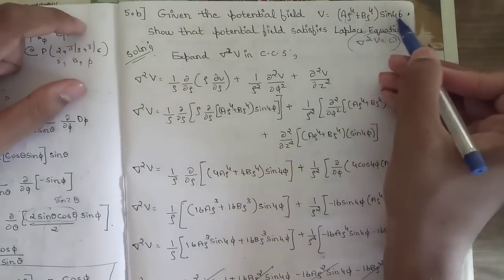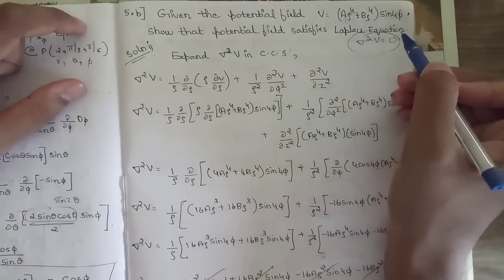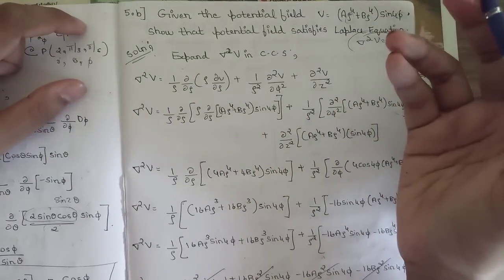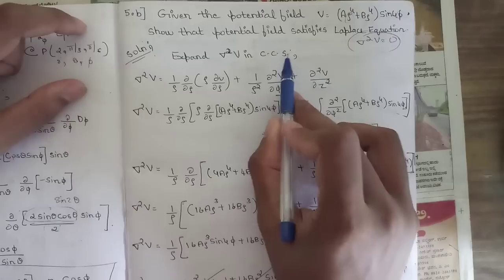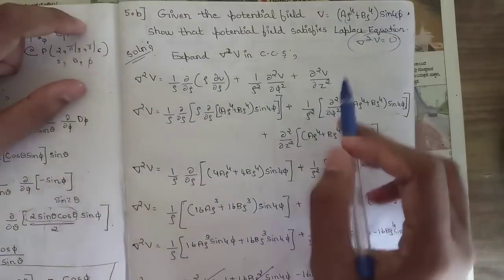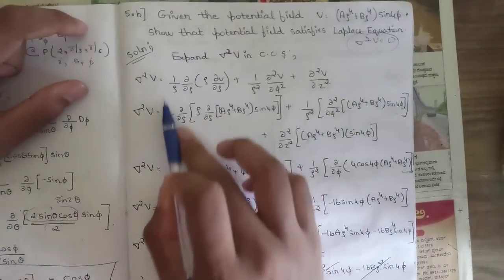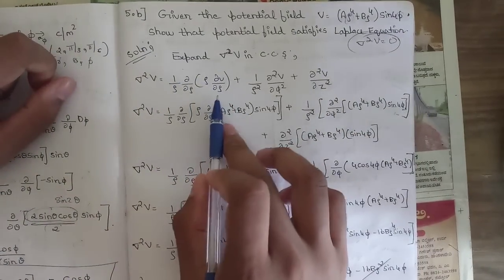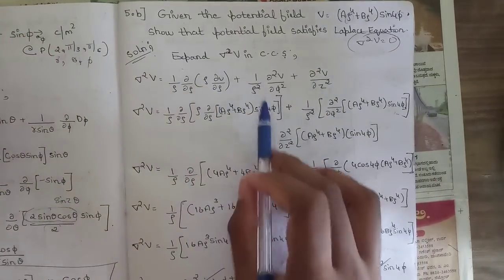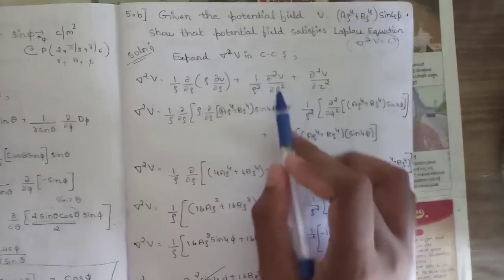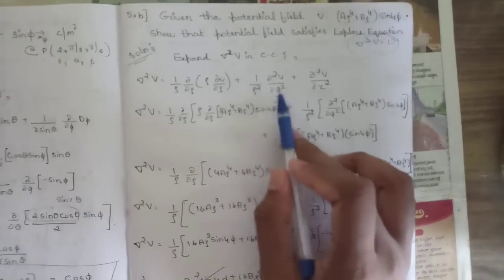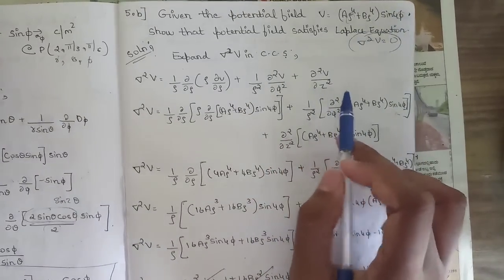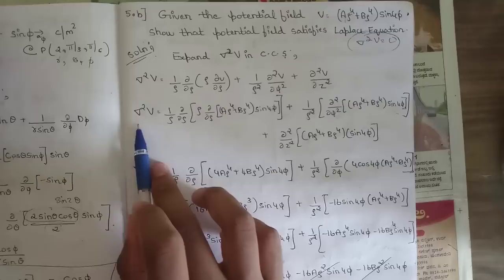We expand ∇²V in cylindrical coordinates: (1/ρ)(∂/∂ρ)(ρ ∂V/∂ρ) + (1/ρ²)(∂²V/∂φ²) + (∂²V/∂z²).